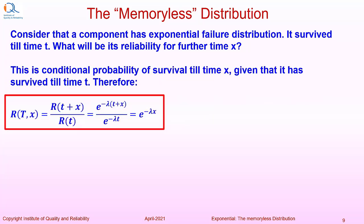Therefore, reliability during time interval x, given that it has survived till time t, will be given by e to the power minus lambda t plus x divided by e to the power minus lambda t. And that again equals e to the power minus lambda x.